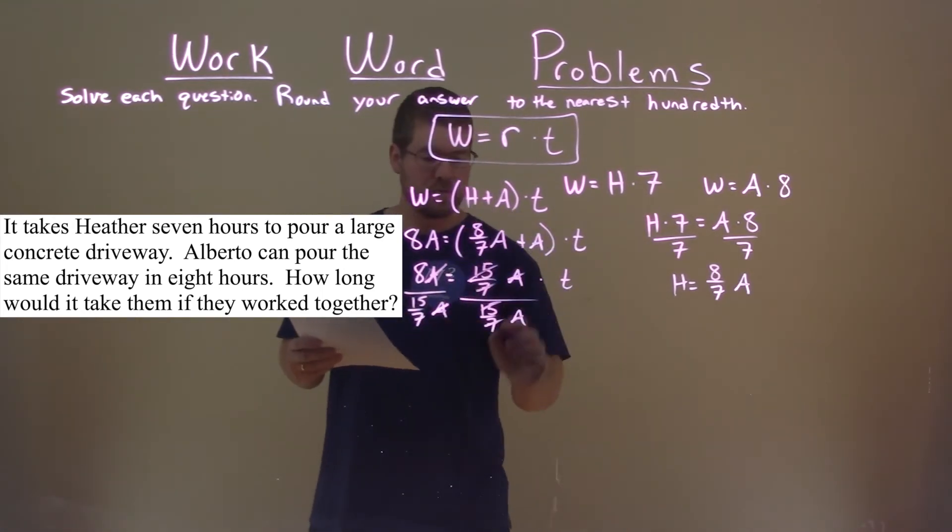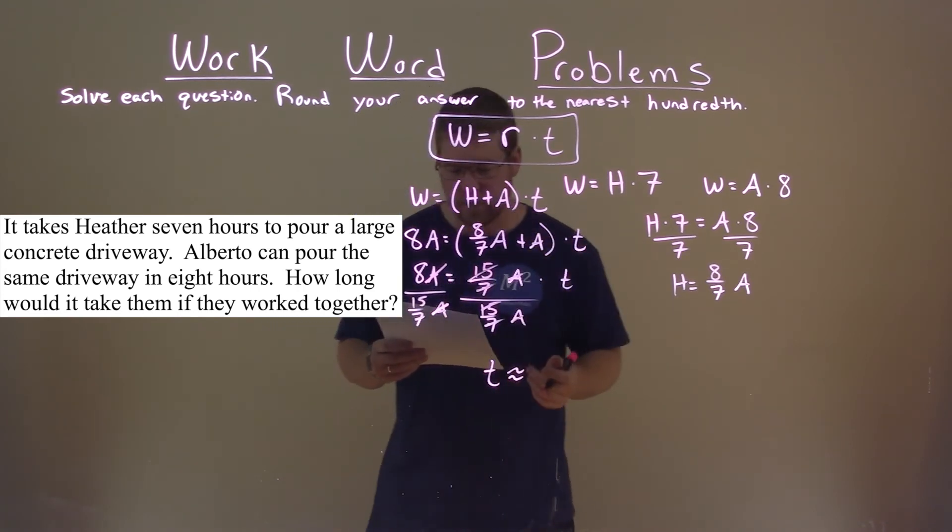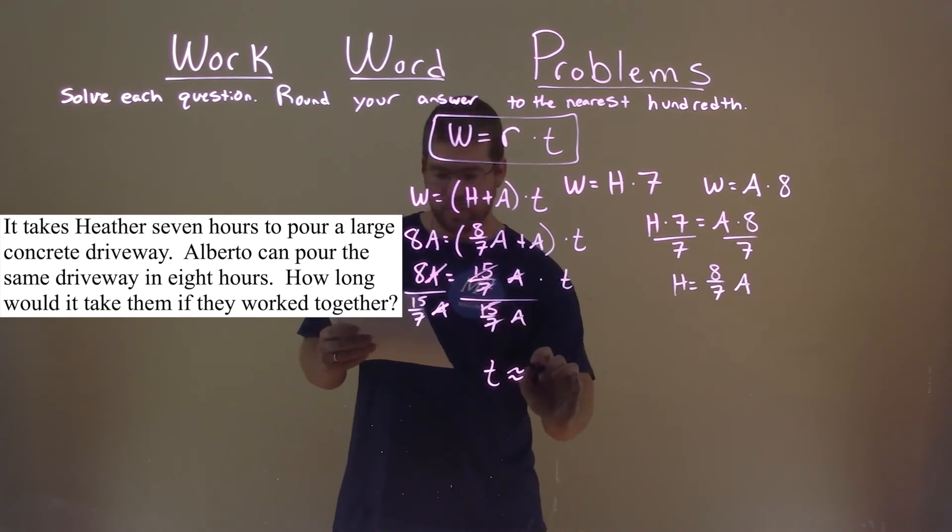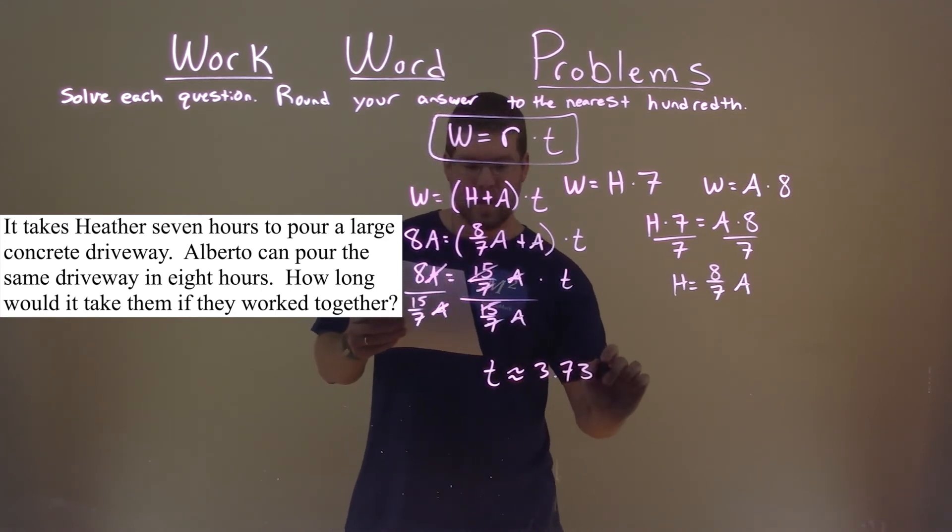On the left side, our variable A cancels, leaving us with T equals approximately, 8 divided by 15 over 7, which is approximately 3.73 hours.